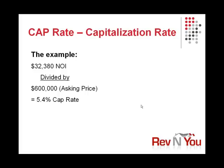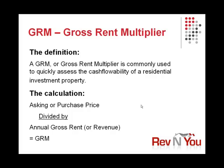Finally, your gross rent multiplier. This is more common with residential real estate than the first two, which are more common with commercial real estate. Your gross rent multiplier is commonly used to quickly assess the cash flow ability of a residential investment property. The calculation is: you take the asking or purchase price, divide it by the annual gross rent, and that gives you your GRM.